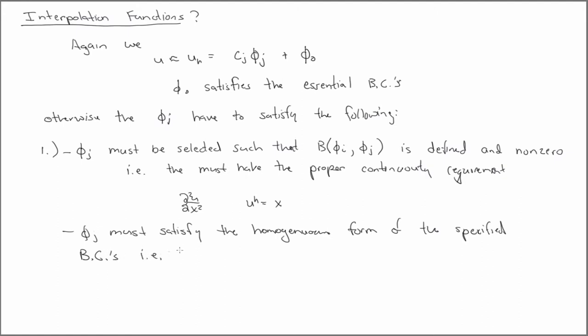That is, if you're given an essential boundary condition that has some initial value u0, then the phij must satisfy the homogeneous form, which would be the initial condition at zero.